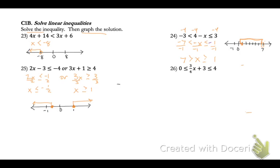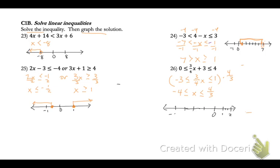Number 26 is an 'and' inequality written in the middle form. We subtract 3 from all sides to get negative 3 is less than or equal to three-fourths x, which is less than or equal to 1. Now we multiply everything by four-thirds: negative 3 times four-thirds gives us negative 4, which is less than or equal to x, which is less than or equal to four-thirds. On a number line, plot four-thirds and negative 4 with solid points at both, and shade in the middle.